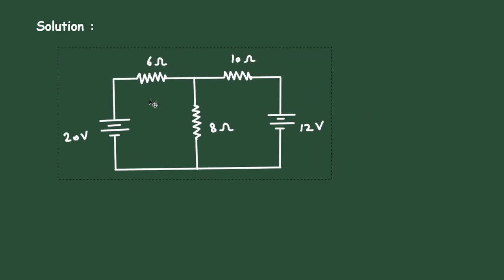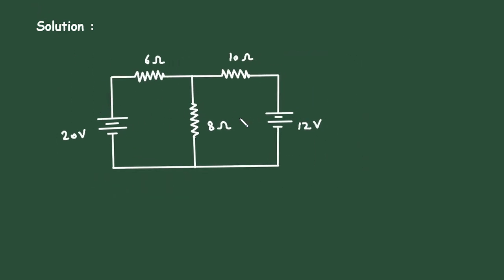Solution. Here we can see there are two sources — a voltage source and also a voltage source. First of all, we will consider the 20 volt voltage source and find the value of I prime. Then we will consider the other voltage source and find the value of I double prime. After that we will look at the direction of current and do the mathematics accordingly.